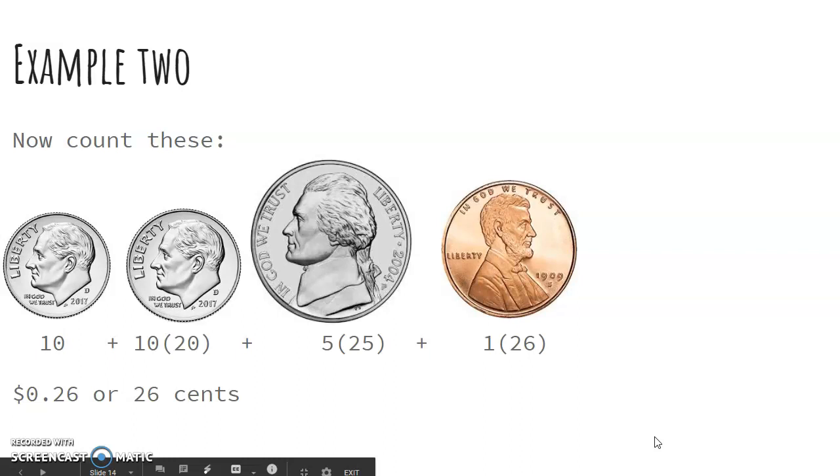So the easiest thing to do when we're counting coins is to put the ones that are alike together and count those first and then add on.